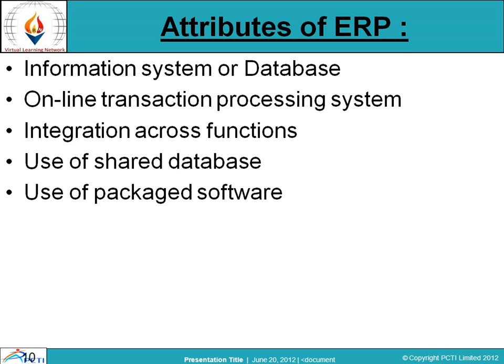The attributes of ERP — there are many properties and characteristics that make it a popular and business-oriented software. First one is Information System or Database: ERP acts as a container of information and retains the database of information within the organization. Online Transaction Processing System: ERP supports OLTP — routine data can be immediately processed with the help of ERP. Integration across functions: many functions of the organization run on a single platform under the same umbrella using ERP.